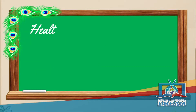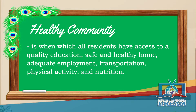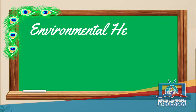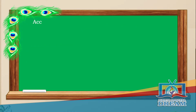A healthy community is one in which all residents have access to quality education, safe and healthy food, adequate employment, trustworthy community services, and health care — in addition to physical activity and nutrition. Environmental health comprises those aspects of human health that are determined by physical, chemical, biological, social, and psychosocial factors in the surrounding environment.